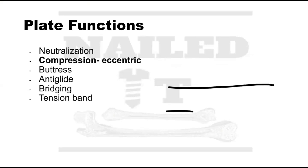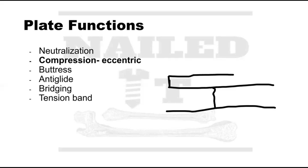Another way to use a plate is in compression mode. Say we have a transverse fracture of the bone. There are different plate designs where you can actually compress through the plate itself. To get a screw to compress across a transverse fracture, ideally the screw needs to be perpendicular to the fracture plane to get compression along that line.